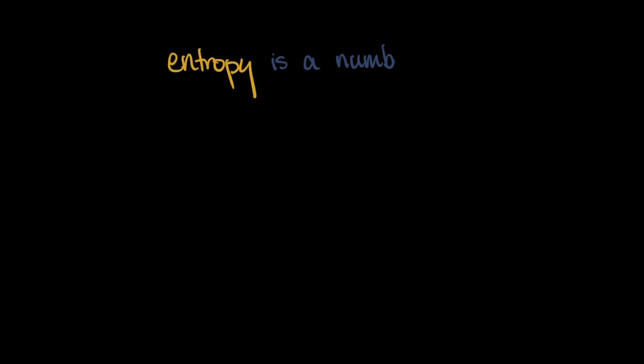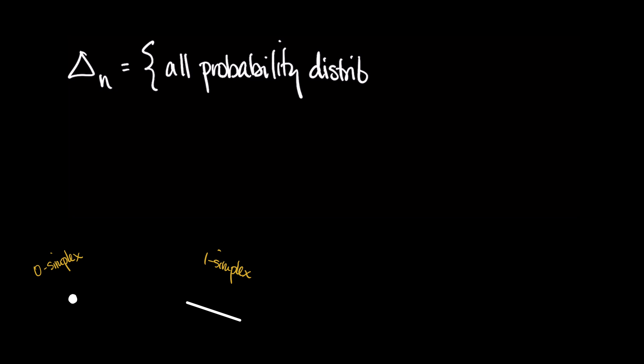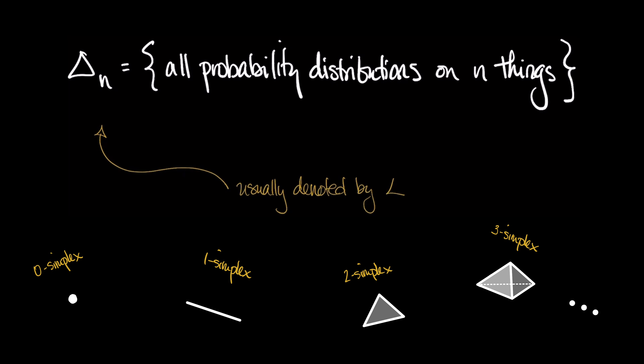Entropy is just a number that's assigned to a list of probabilities, that is a probability distribution, which can be thought of as a measure of surprise or information content. Now, for each natural number n, the set of all probability distributions on n things is actually a topological space called a simplex, which are famous little spaces in the world of topology.